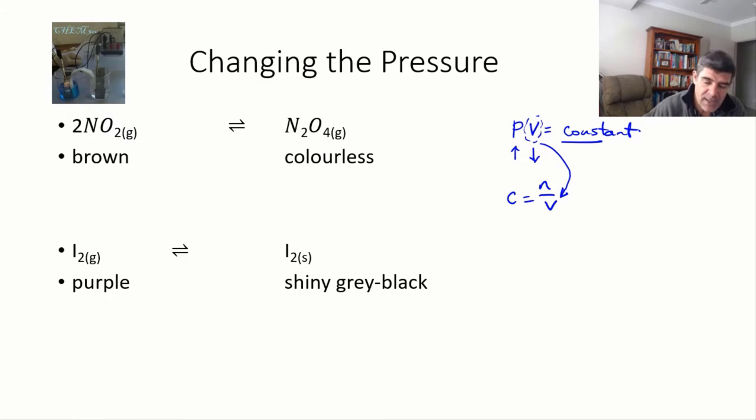The first example is one that we have looked at previously, which is nitrogen dioxide and dinitrogen tetroxide.